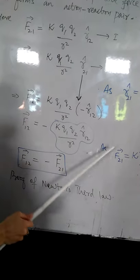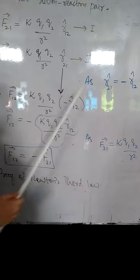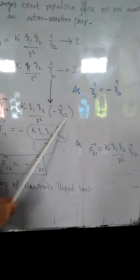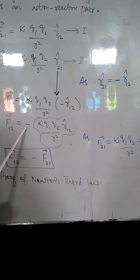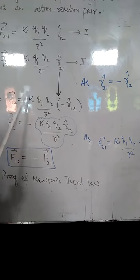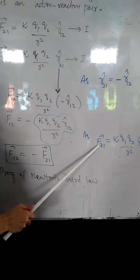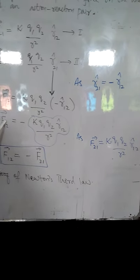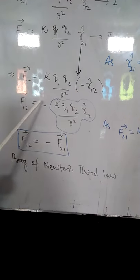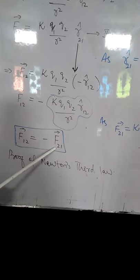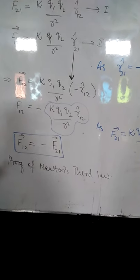As we know that F21 equals K Q1 Q2 over R square, so in this figure I kept this minus sign here and by considering rest of the factors equals to F21. So this equation becomes F12 equals minus F21 which is the proof of Newton's third law.